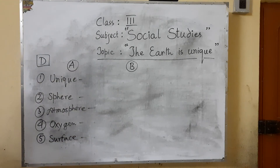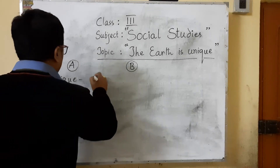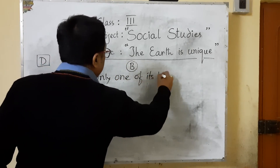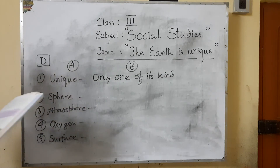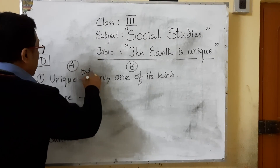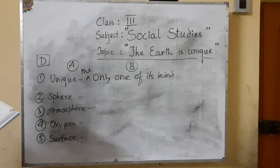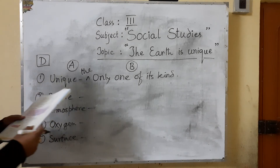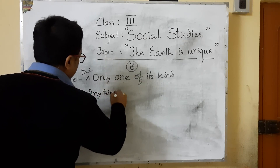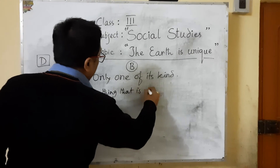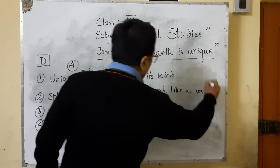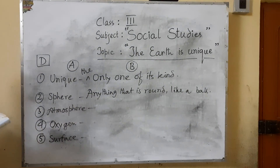Number one: unique — the only one of its kind. Number two: sphere — anything that is round like a ball, like the Earth.